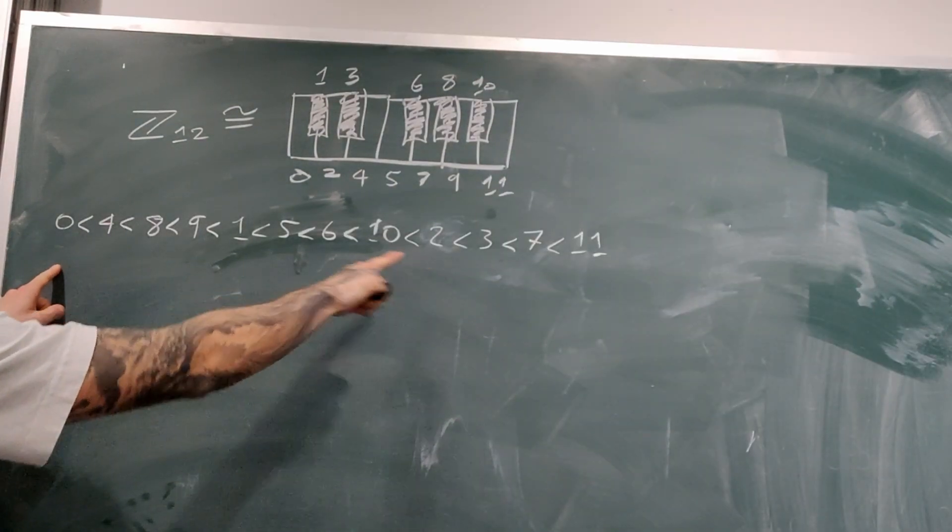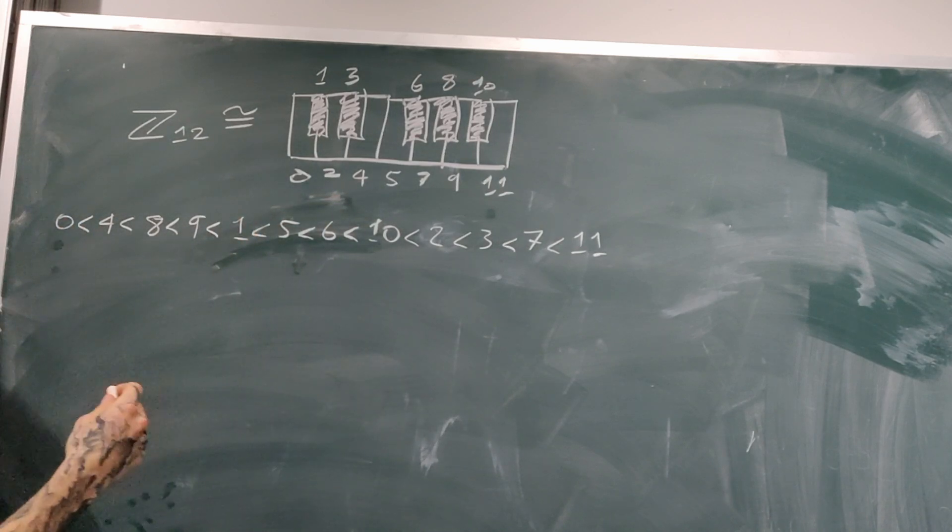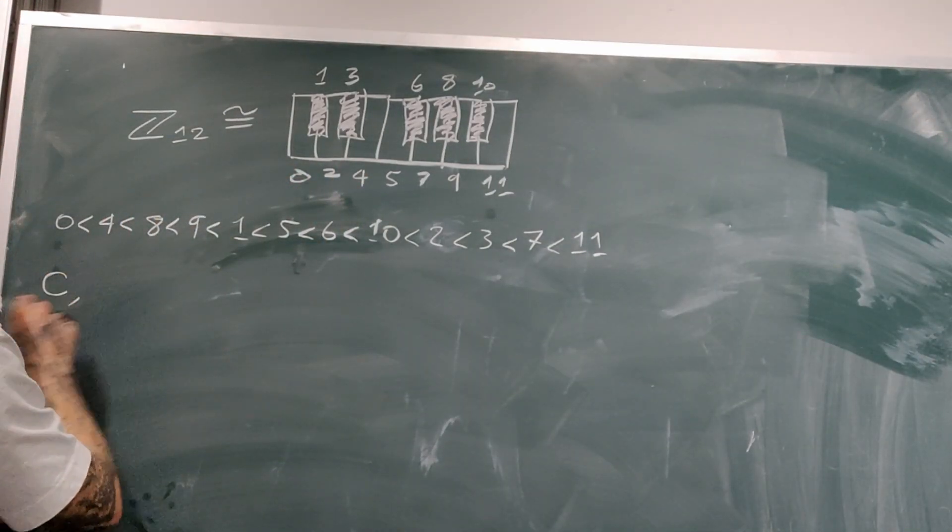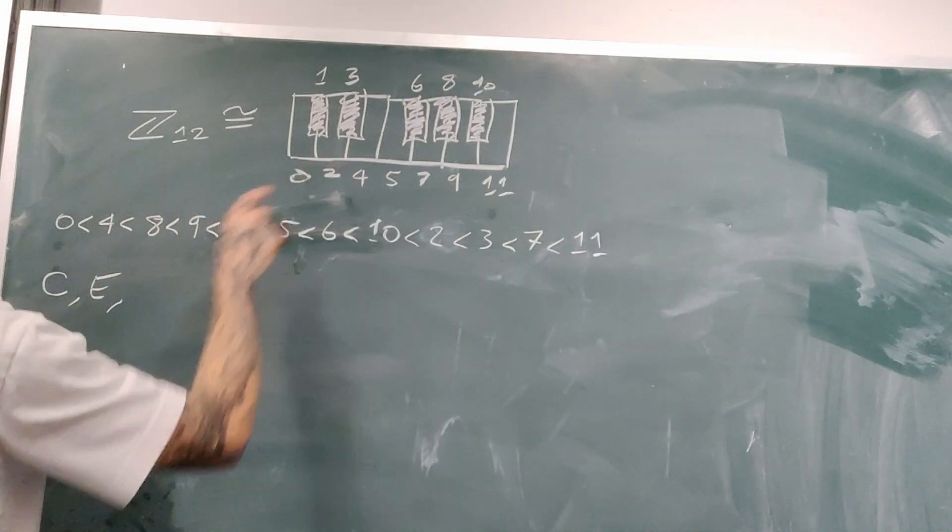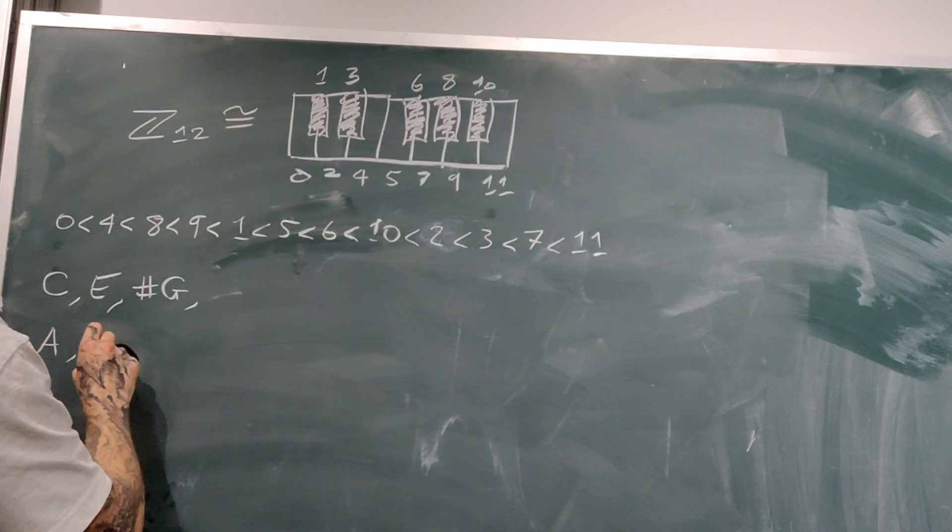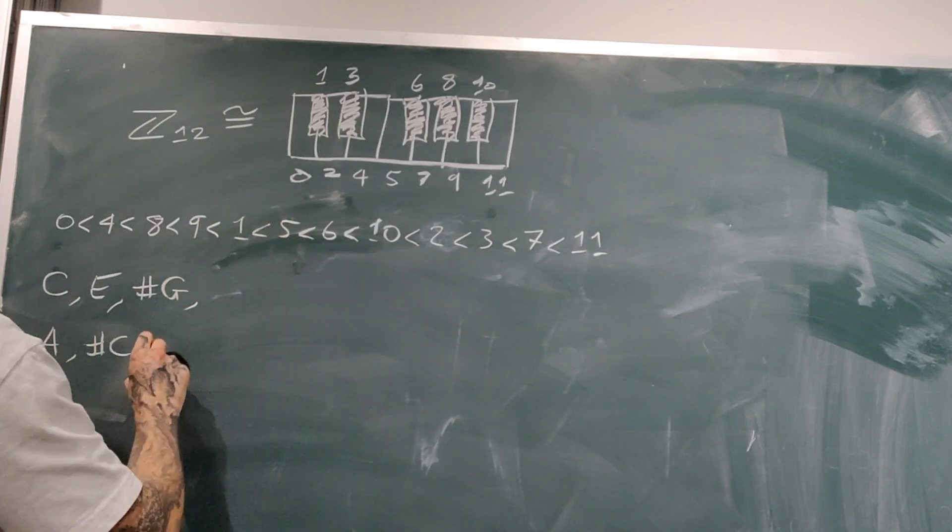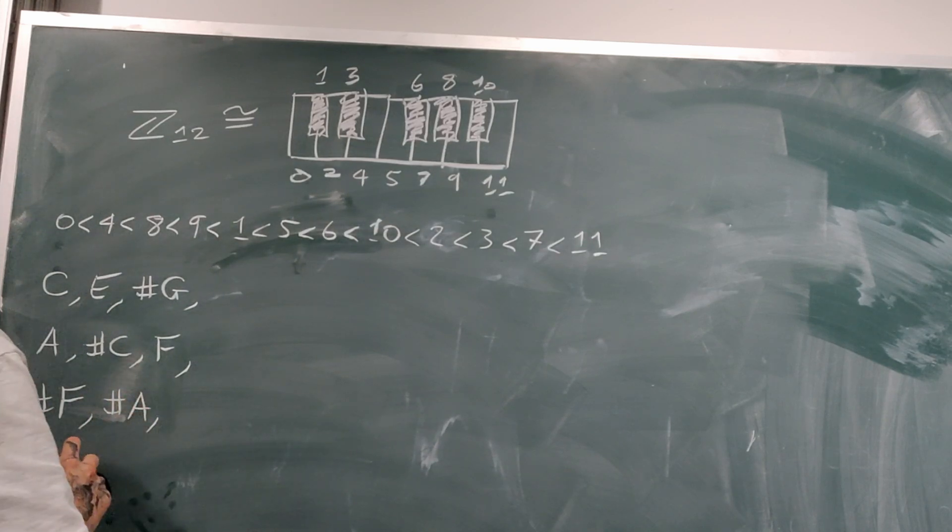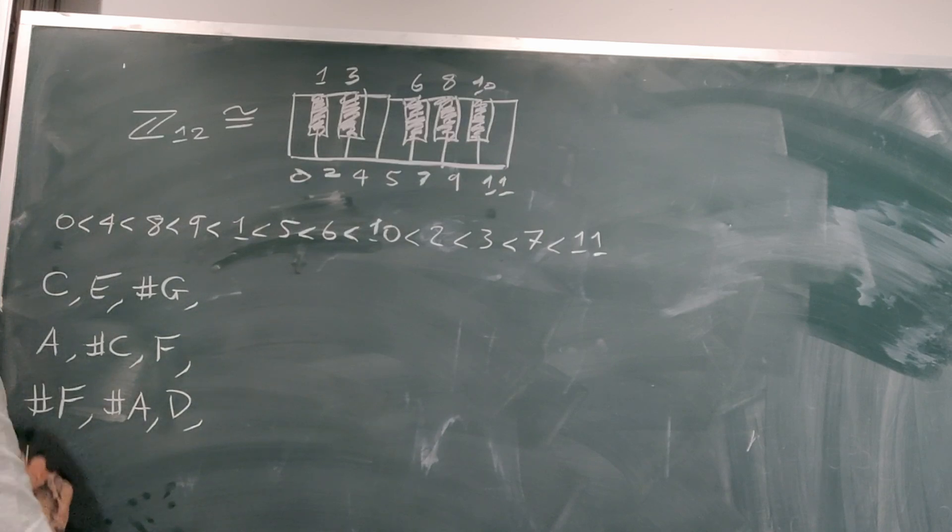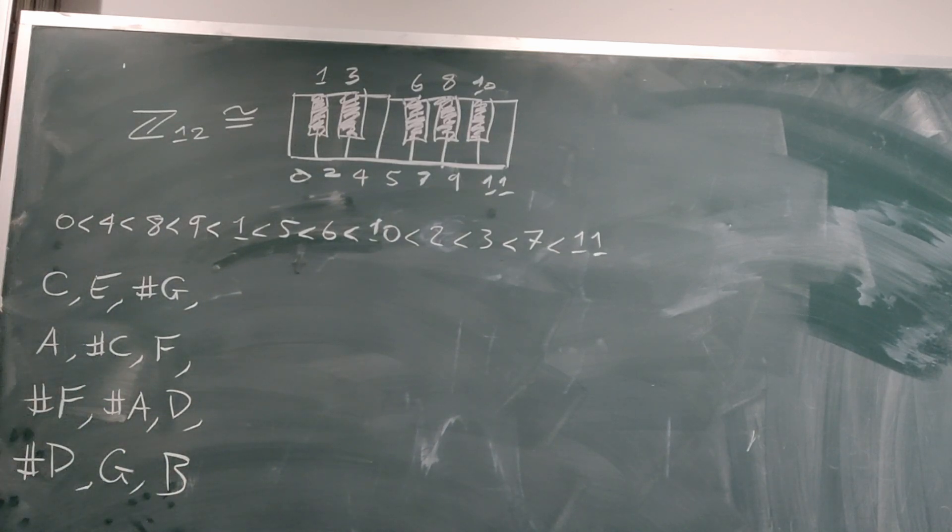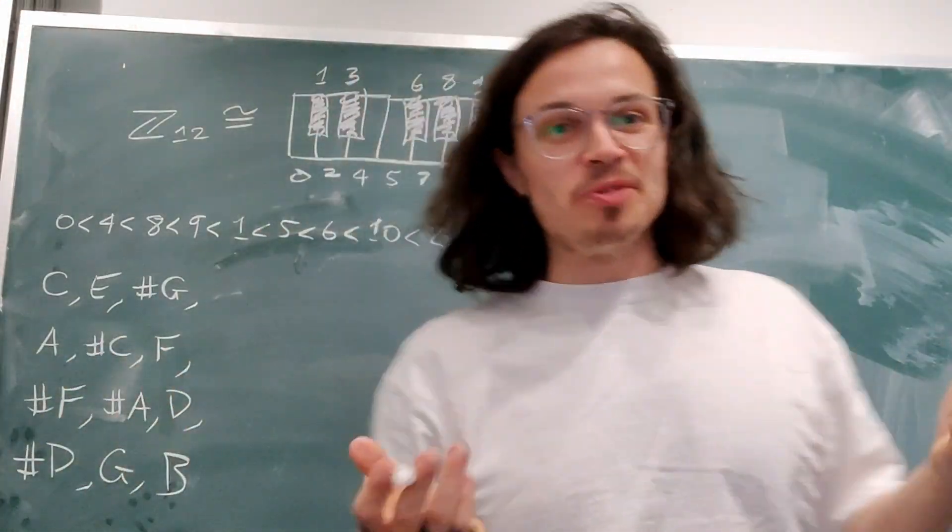So just to remind you, I've drawn out the ordering on the blackboard again. So it was 0, 4, 8, 9, 1, 5, dot dot dot. And then what I'm going to do is look at what keys these numbers correspond to. So we have 0, that starts off with C, and then 4, that's E, and then 8, that's G sharp. And then 9 is A, 1 is C sharp, 5 is F, and then 6 is F sharp, 10 is A sharp, 2 is D, 3 is D sharp, 7 is G, and then 11 is B. So that's our scale. And now the question is musically, which scale is this?